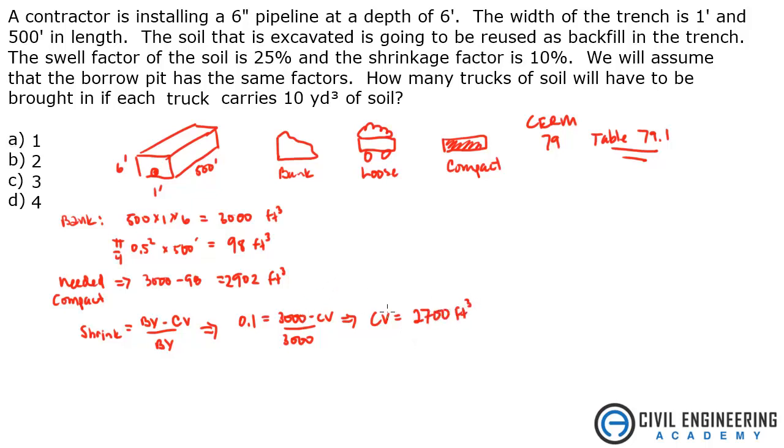Okay so we've got a difference here. What we need, so when we pull out the soil and put it back we're only getting 2,700 cubic feet. When we pull out the soil from this trench, put it back in and compact it with the shrinkage factor, we're only getting 2,700 cubic feet and we need 2,902.